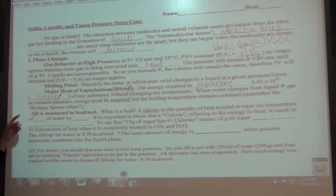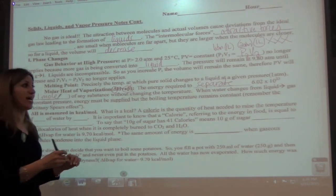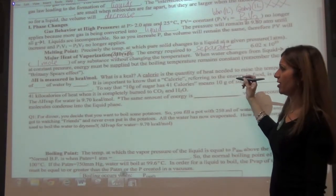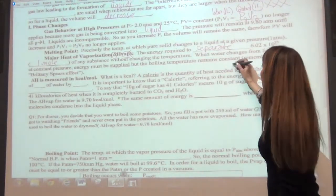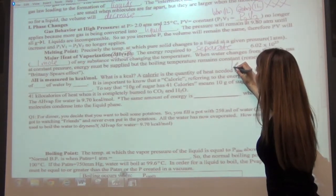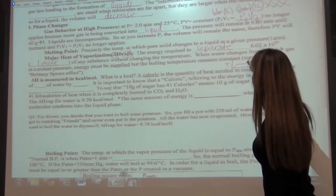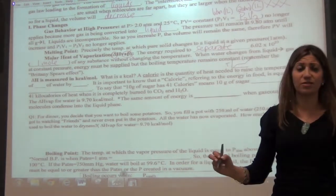When water changes from liquid to gas at constant pressure, energy must be supplied, but the boiling temperature remains constant. When you're going through a phase change, you increase temperature, increase temperature, and once you're at a phase change, your temperature actually remains constant.